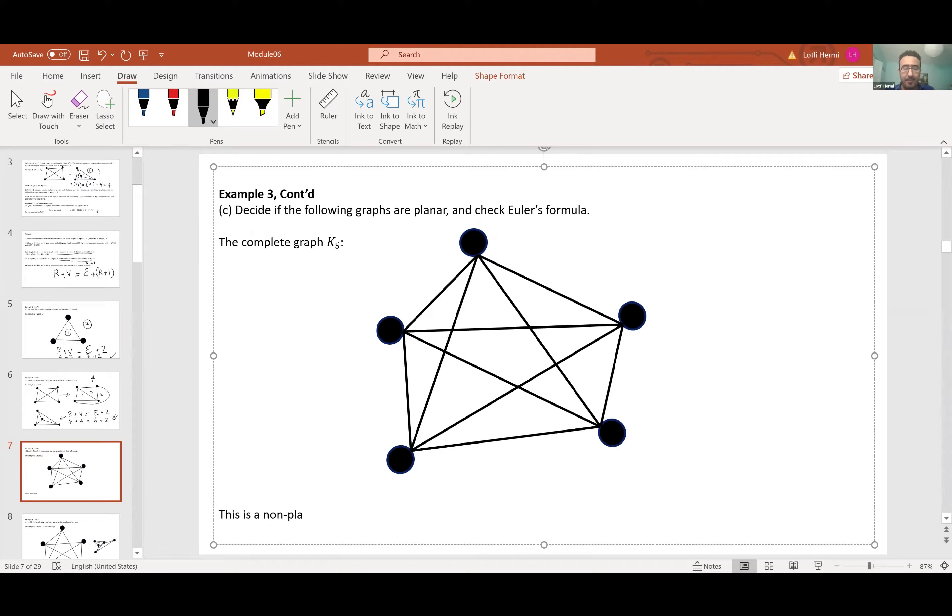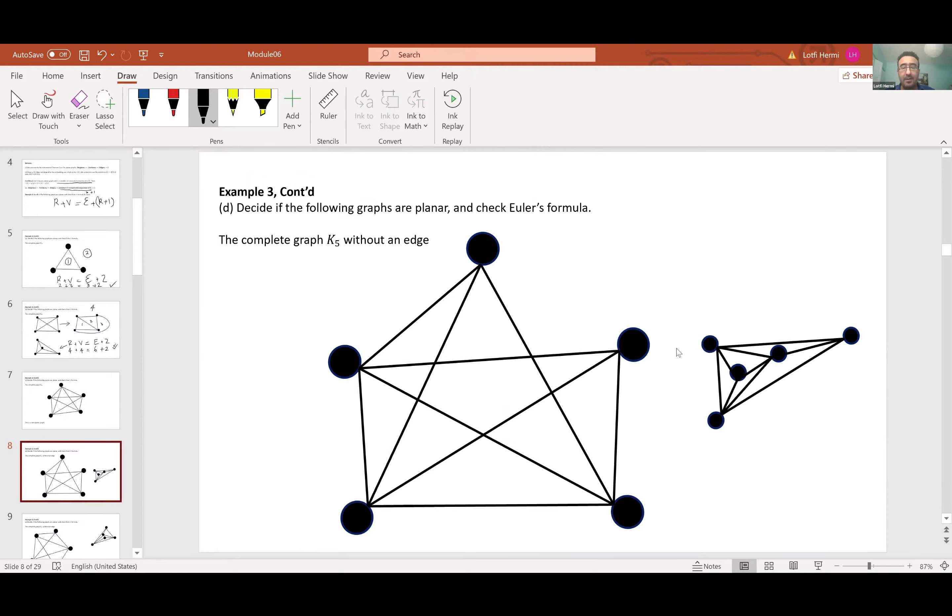This is a non-planar graph. You can play with this at home on your file. Let me remove one edge from this graph to see if I can actually prove that this is planar or not. Suppose I remove the edge from this vertex to this adjacent vertex here. This is exactly K5 without the edge linking these two.